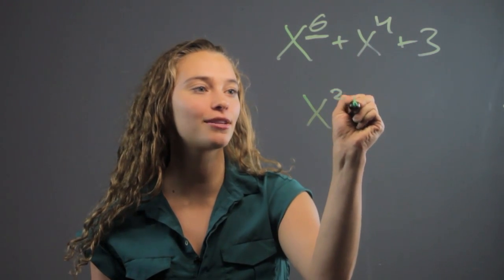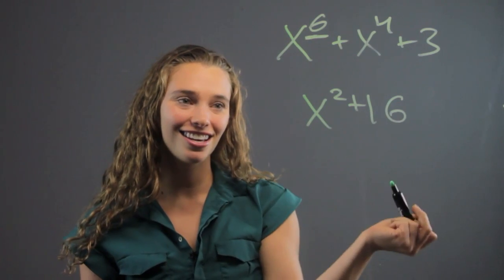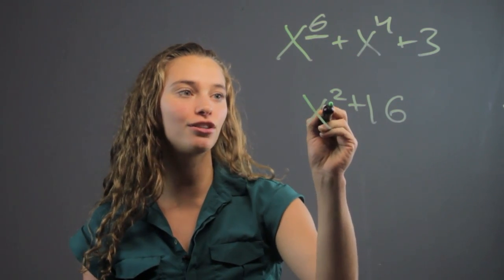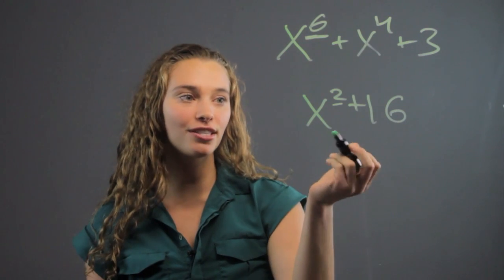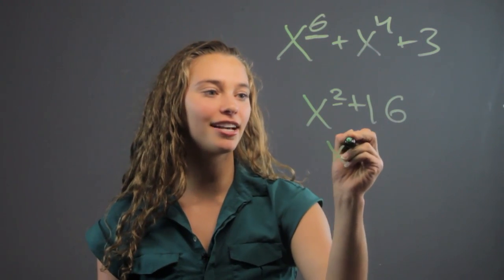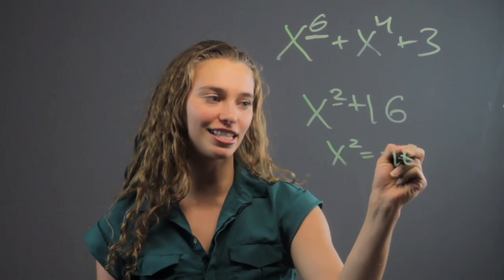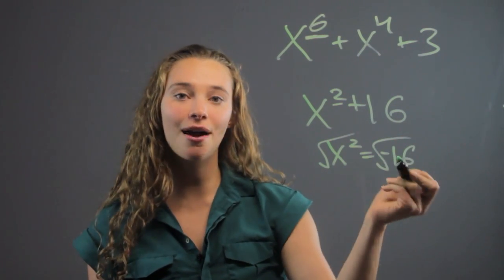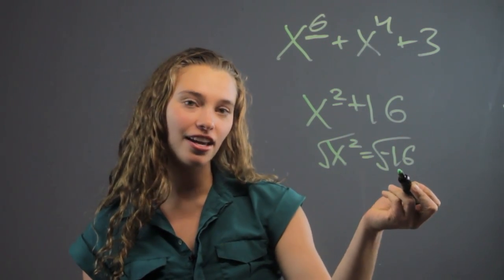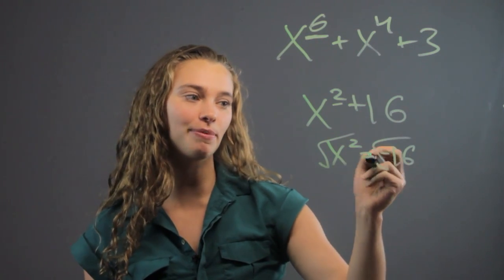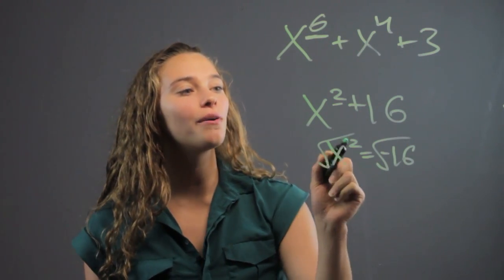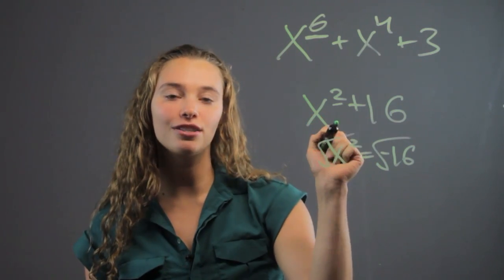If we have a polynomial like x squared plus 16, we don't have any real answers to this. We know that there's two possible roots, but when we solve it, we get x squared equals negative 16, and then when we square root both sides, that's now an imaginary number. That's not a real square root because you're square rooting a negative number. That's imaginary.